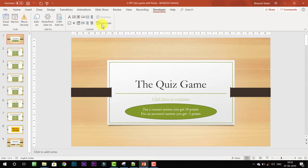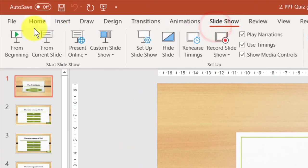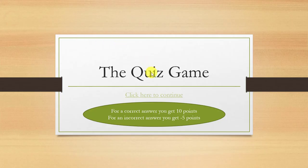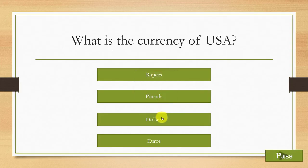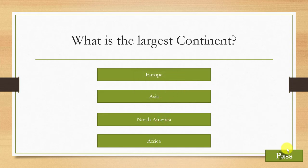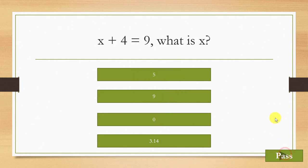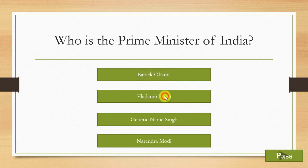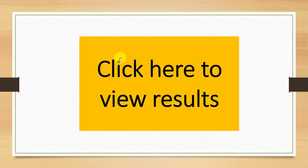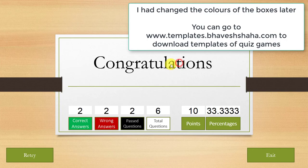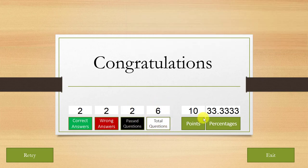Go to Slideshow and click From Beginning. I will answer two questions correctly, pass two questions, and answer two questions incorrectly. Let us click 'Click here to view results.' As you can see, we got two questions correct, two wrong, two passed, and it calculated the total questions correctly. The points and percentages are also shown.